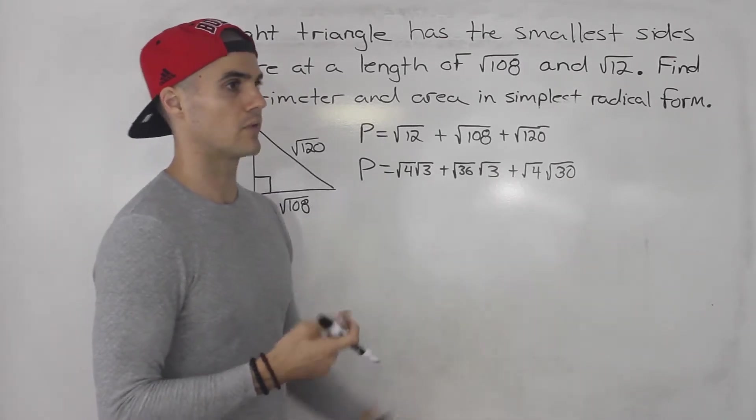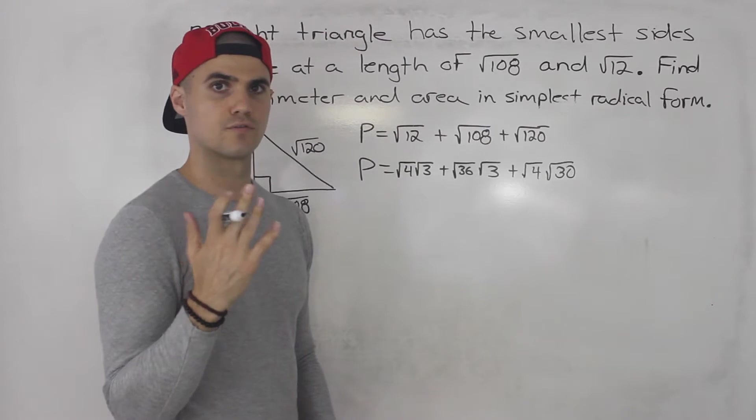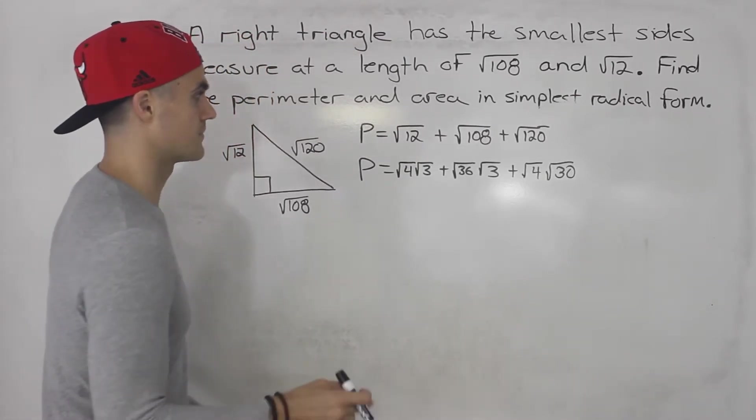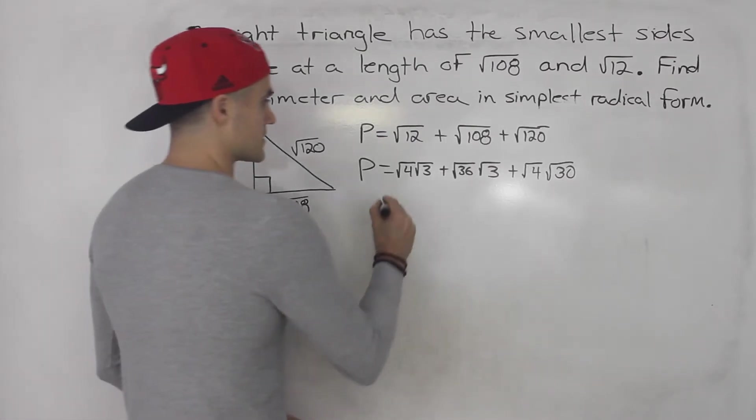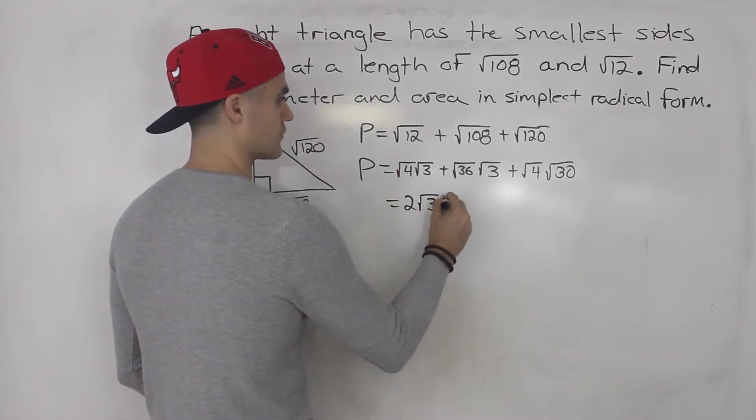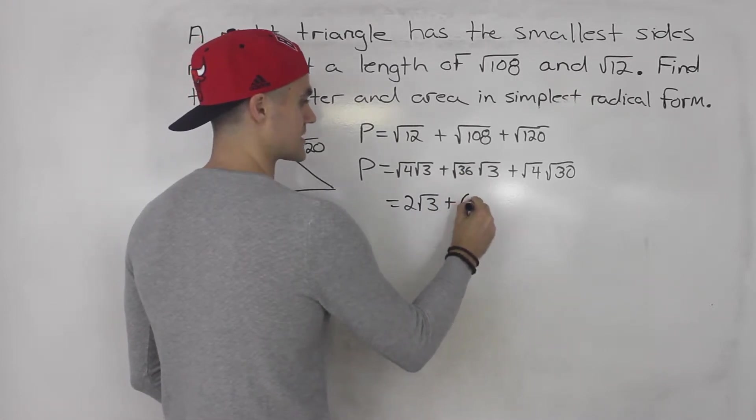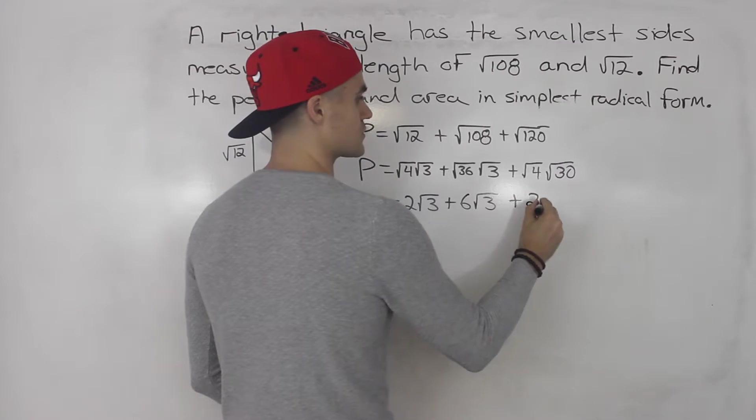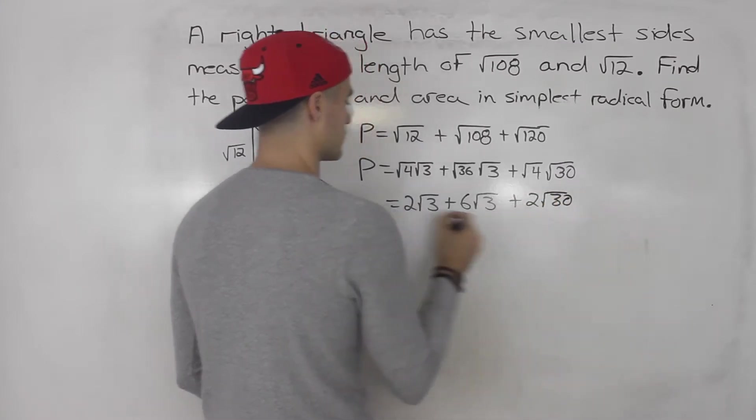30 is not divisible by a rootable number, whether that's 4, 9, 16, et cetera. All right. So here, root 4 is 2. Root 3 can't simplify that further. Root 36 is 6. Root 3 can't simplify that further. And then root 4 is 2, and then the root 30 can't simplify that further.